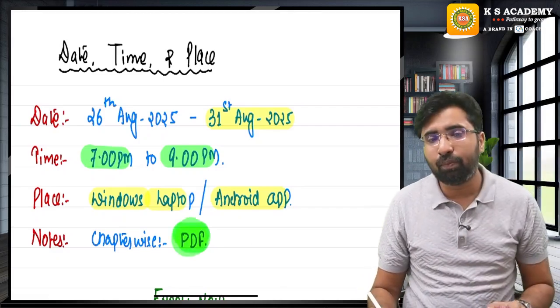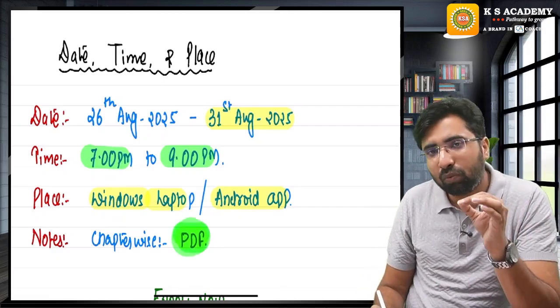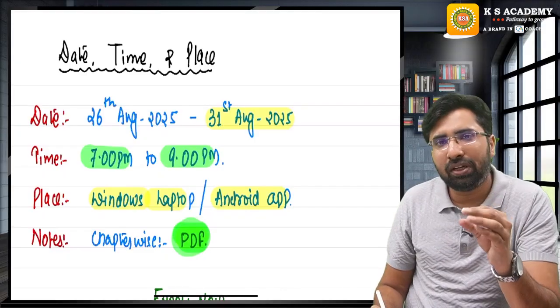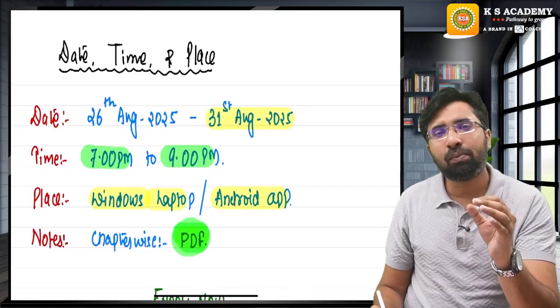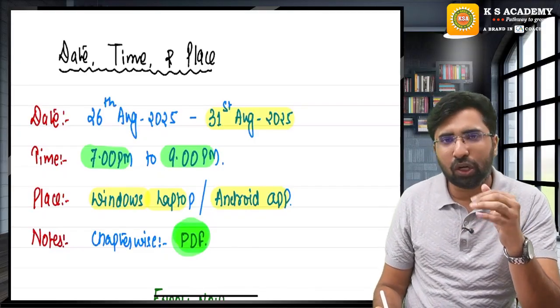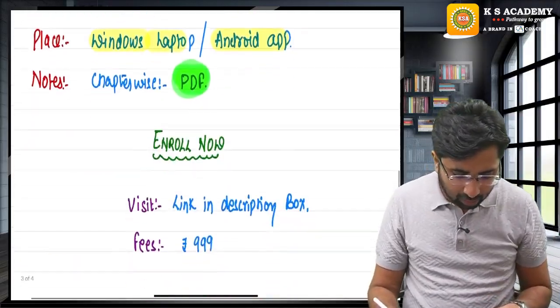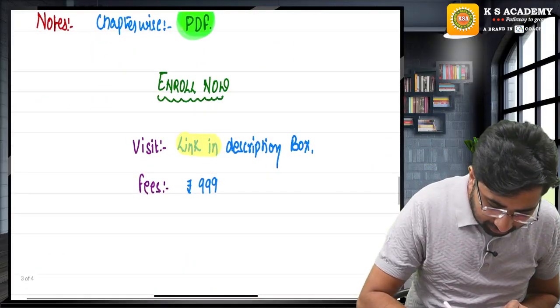Chapter-wise PDFs will be shared in your WhatsApp group. Once you register for the practice batch, a separate WhatsApp group will be made where all the PDFs, chapter-wise PDF submissions you can get the printout one day before and you can join the practice batch in this timing.